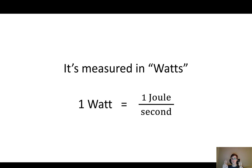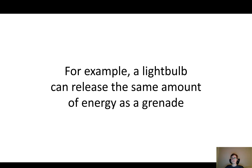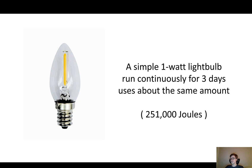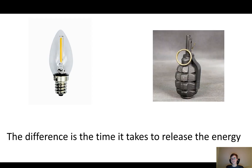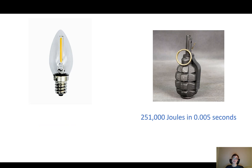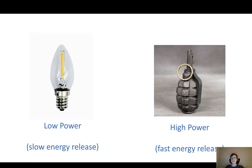Technically, power is measured in a unit called watts, and one watt is one joule of energy being released every second. As a quick illustration, a light bulb can actually release the same amount of energy as a grenade. This is a Russian F1 grenade used in World War II — it used about 60 grams of TNT, which holds about 251,000 joules of energy. A simple one-watt light bulb run continuously for three days straight uses about the same — 251,000 joules. The difference is the time it takes to release the energy: the light bulb releases it in about 259,000 seconds, and the grenade releases the same energy in 0.005 seconds — about 50 million times faster. So even though they release the same amount of energy, the light bulb has low power and the grenade has high power.